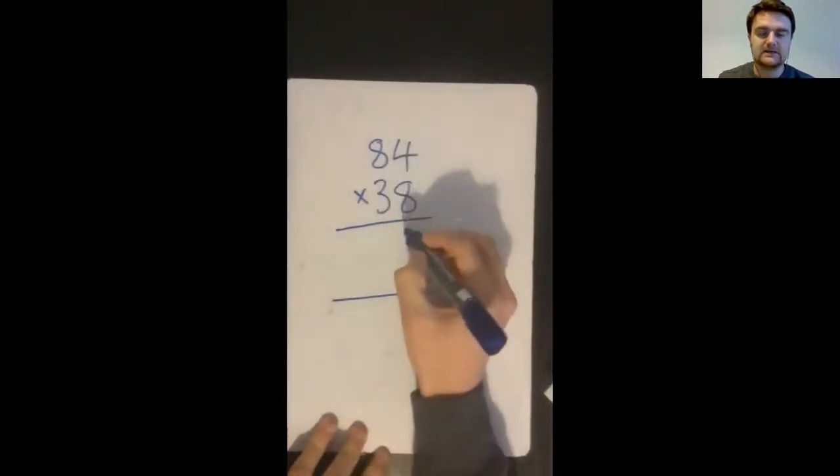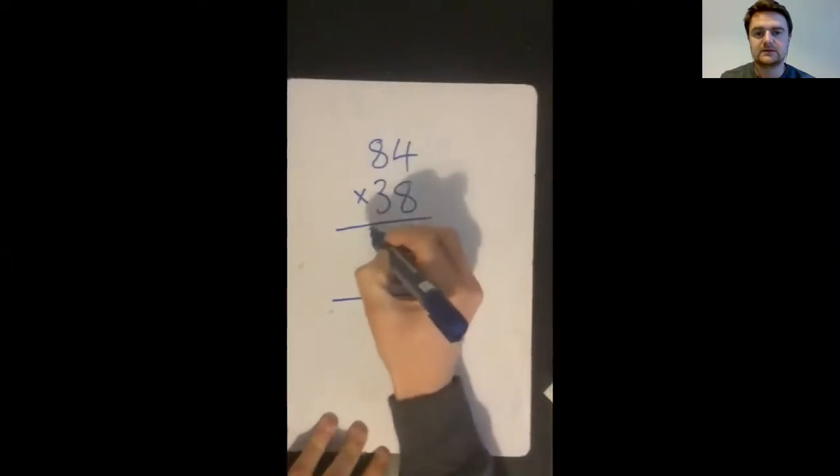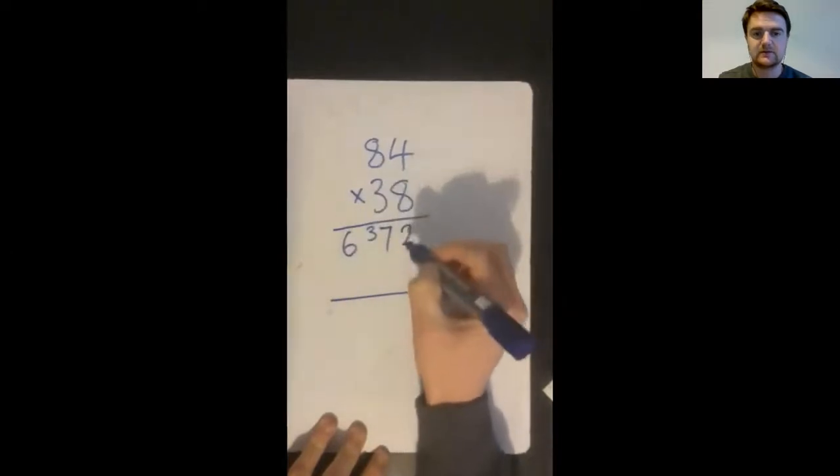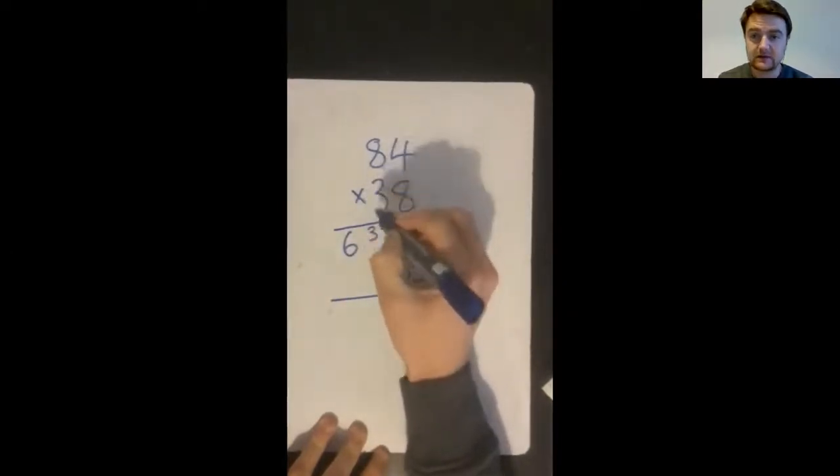Now four times eight is 32. I can't fit 32 in there. So I've got to carry my three tens over. Eight times eight is 64. Add the extra three gives me 67. I'll put my placeholder zero in there.